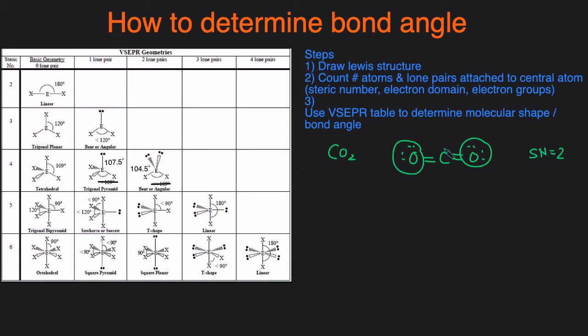So with a steric number two and no lone pairs, steric number two, zero lone pairs, that will give us a linear shape. So that means the bond angle between the O, C, and O is 180 degrees.